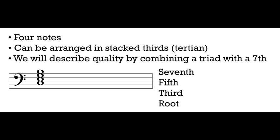When we talk about the qualities of 7th chords, we're going to be describing them by combining a triad that we already know with a 7th above the root. That's how we're going to be describing all of these. Just like our triads, the 4 notes of a 7th chord have names. The first 3 are familiar: we call the lowest note the root, the next pitch is the 3rd, the next is the 5th, and the top pitch — when stacked in ascending thirds — is the 7th.